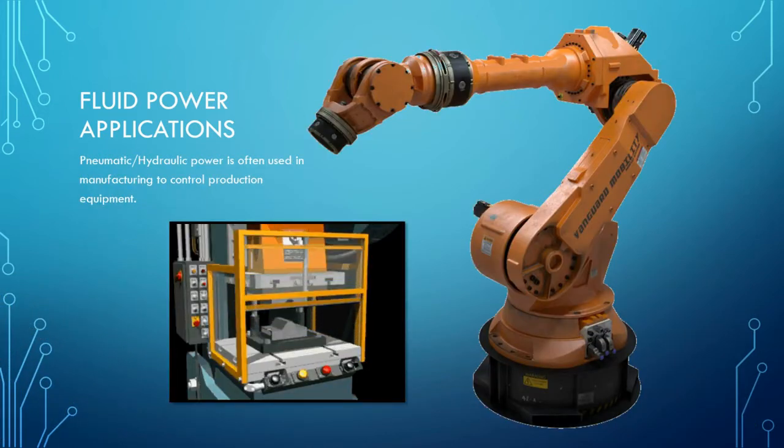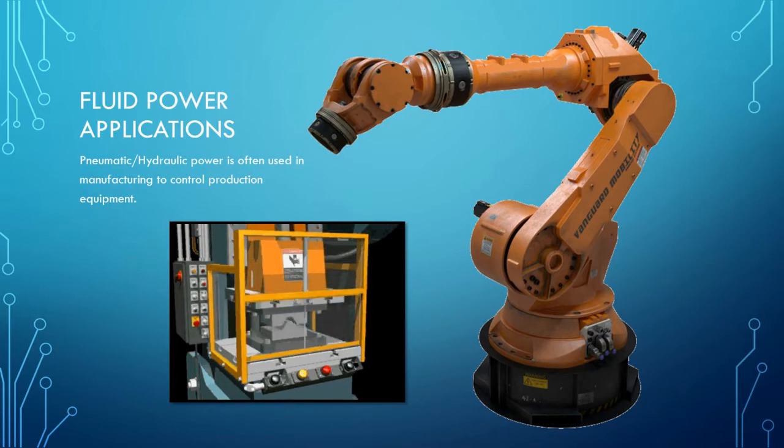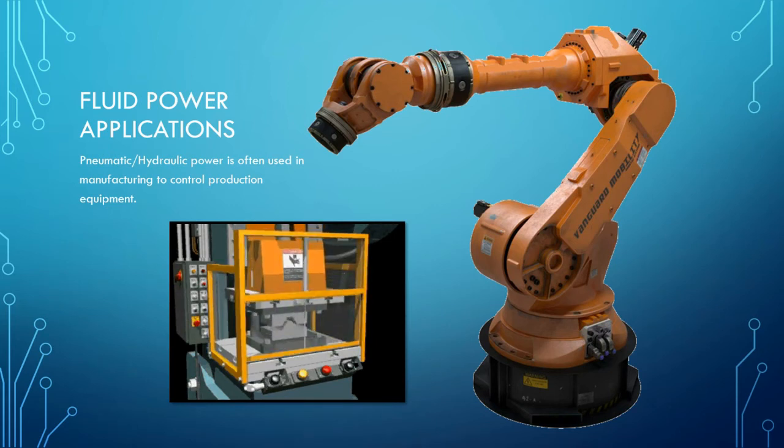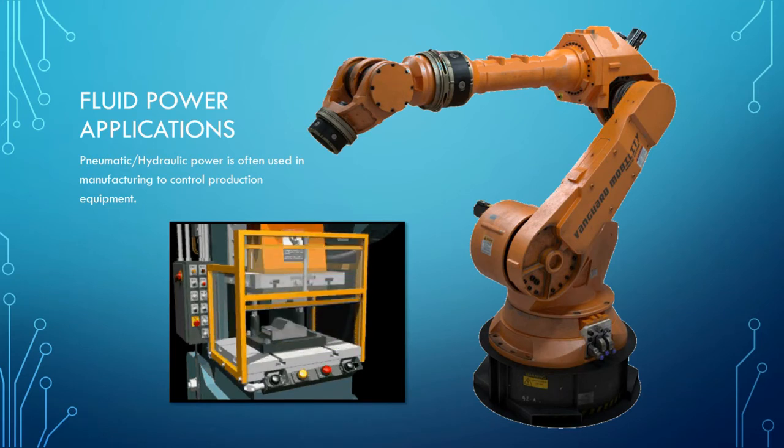Fluid power systems are also widely used in manufacturing to control production equipment. Robotic arms like this one might have all of their joints controlled by pneumatics. The animation on the left shows a piece of equipment that uses an air-powered safety guard to prevent flying debris. A pneumatic piston causes the shield to go up or down as needed.